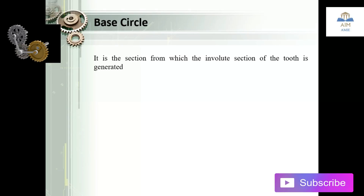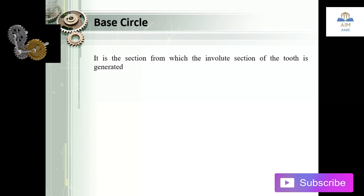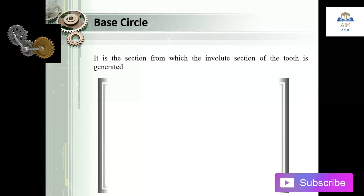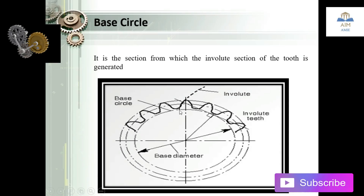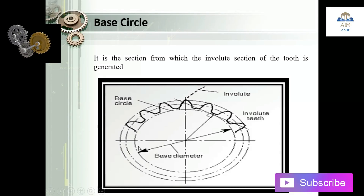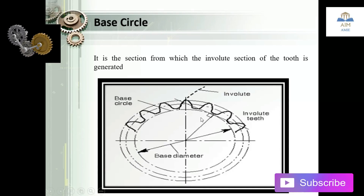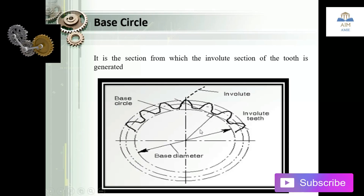The next one is the base circle. The base circle is the section from which the involute profile of the tooth is generated. It is the circle upon which the gear teeth are located, and this is the base diameter for this base circle.